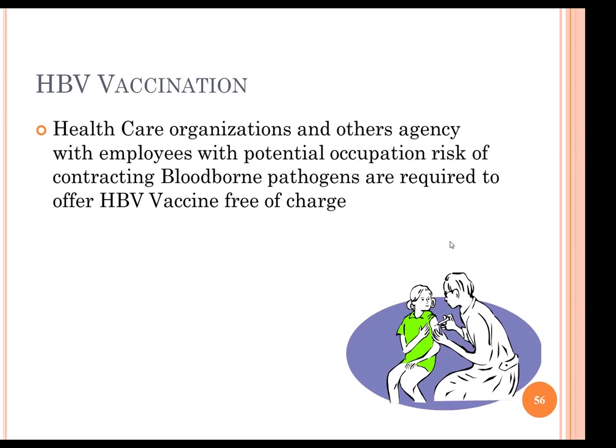The hepatitis B vaccination consists of three doses: the first at zero time, the second one to two months later, and the third about four months after the second. So in about six months you should receive all three vaccinations. It is about 80-90% effective. Sometimes titers are checked to confirm appropriate response. This is offered to all employees, but you may decline. If you decline, you must complete a declination form found in your exposure control plan. You may decline if already vaccinated, but getting the vaccination is strongly recommended to prevent a very serious illness.